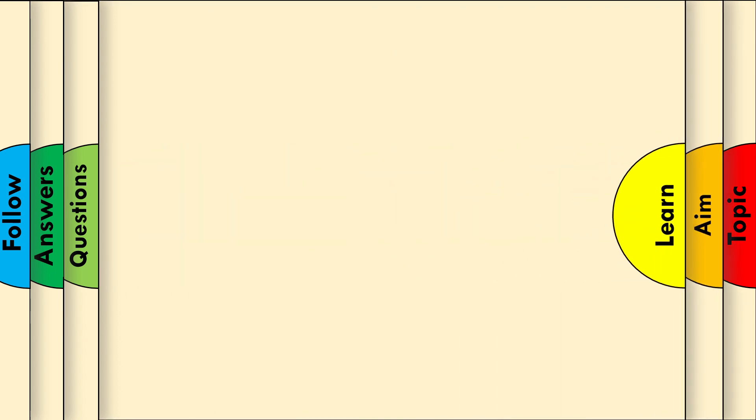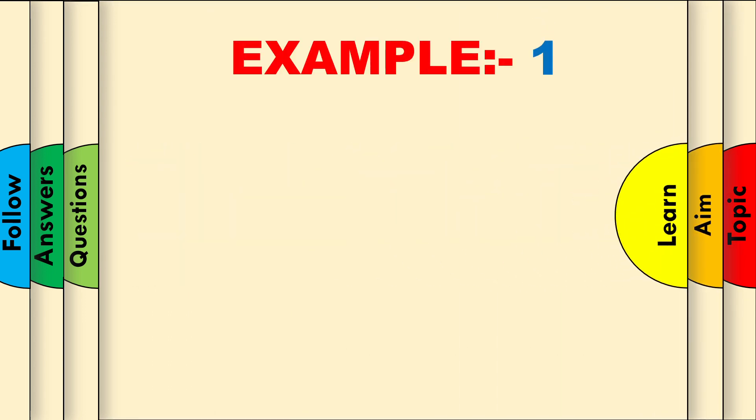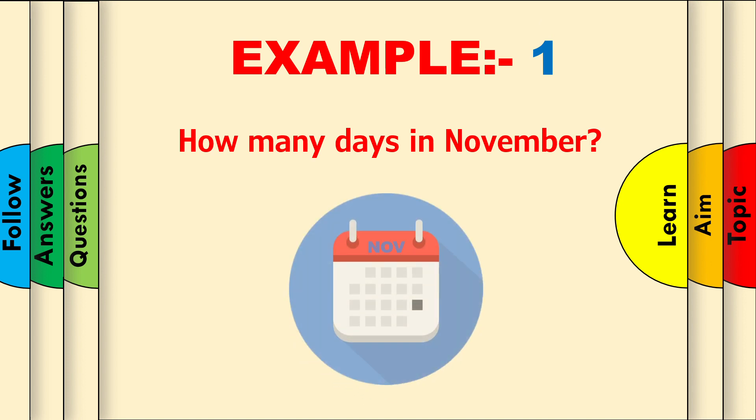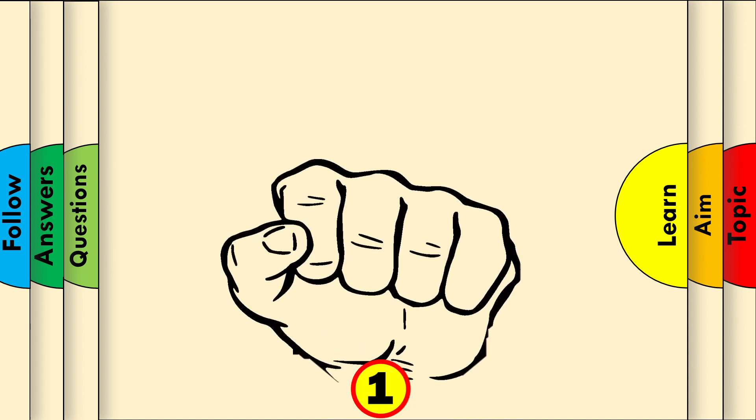Let's learn by example. Example 1: How many days are there in November? Take out your left fist. The first knuckle nearest to your thumb is January. The first groove nearest to your thumb is February. Like so.